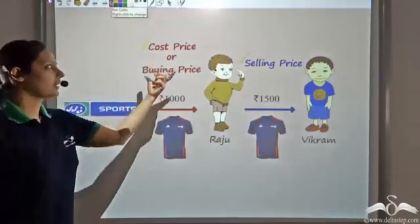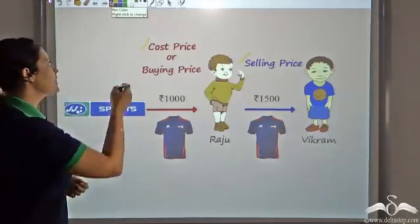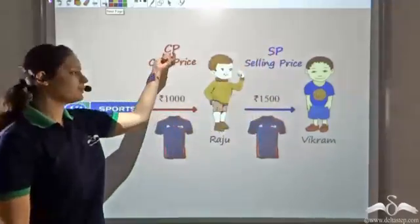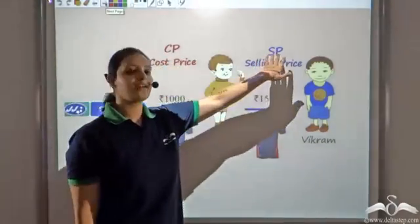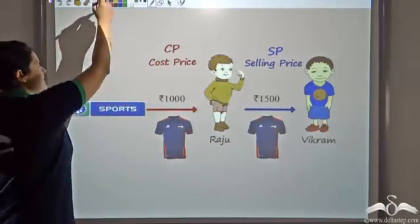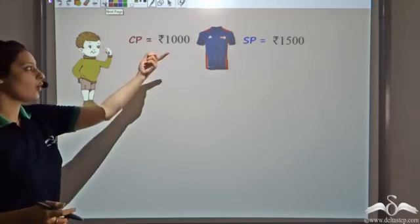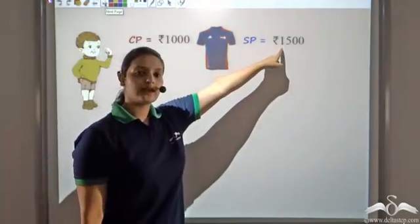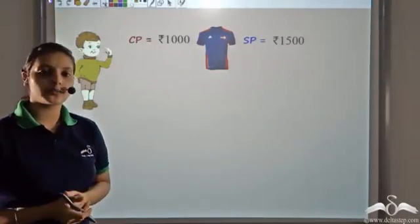Rather than writing cost price or selling price every time, we abbreviate them as CP and SP. CP stands for cost price and SP denotes selling price. So the CP of Raju is 1000 rupees — he bought the t-shirt for 1000 rupees — and his SP is 1500 rupees — he sold the t-shirt for 1500 rupees.